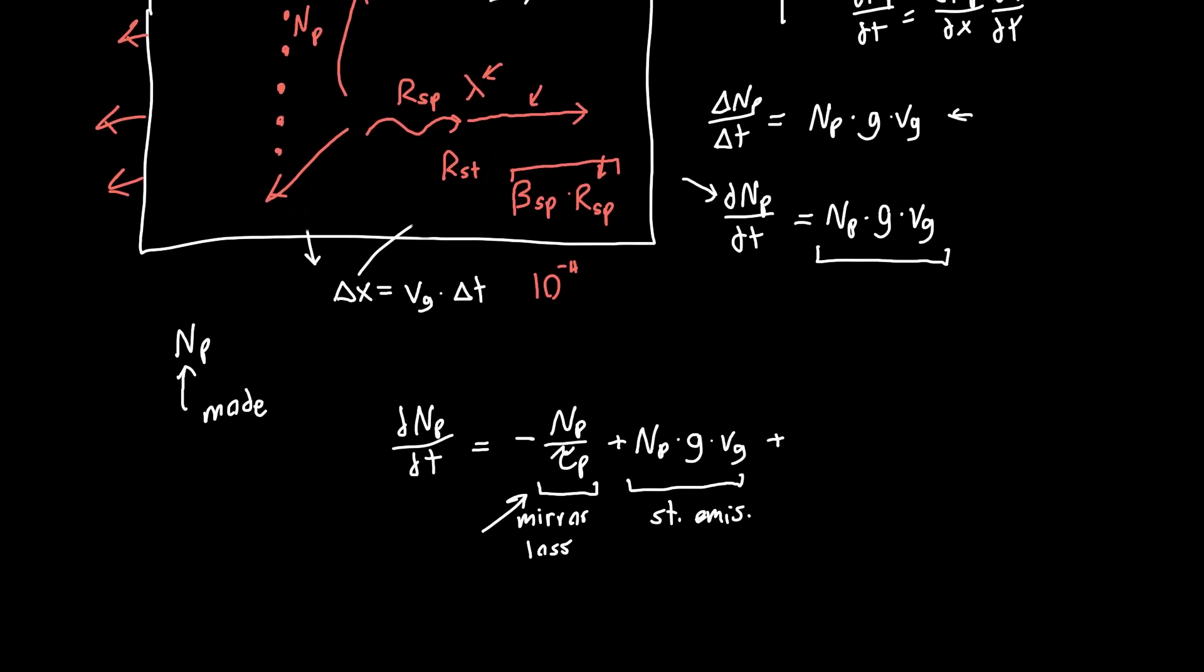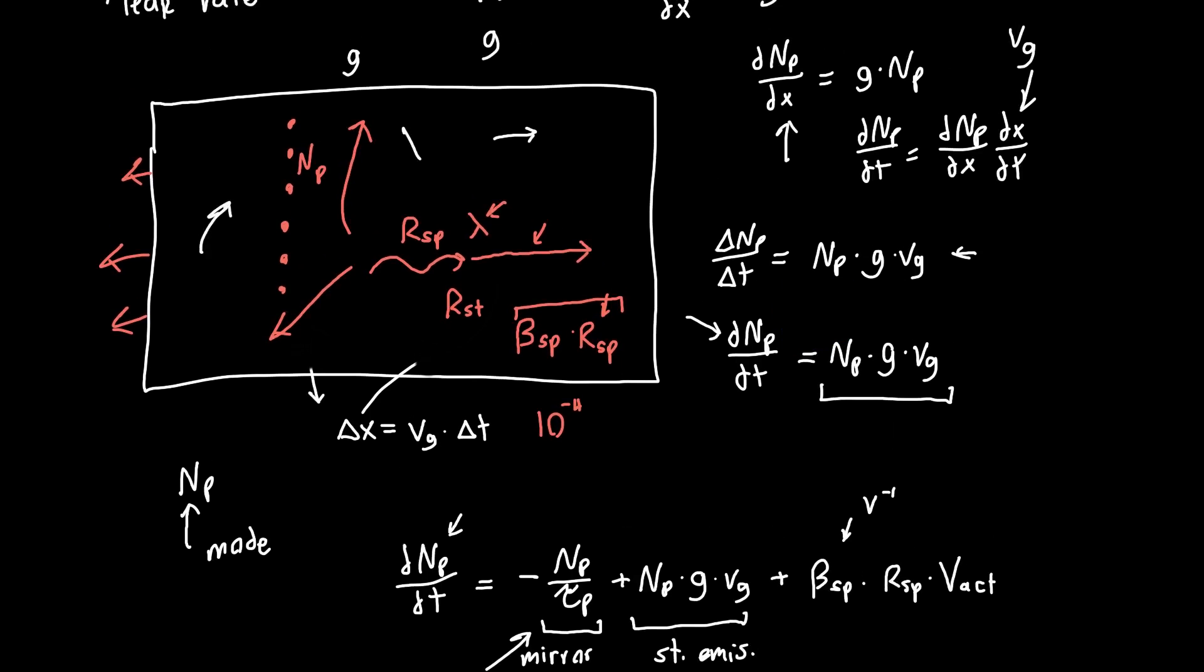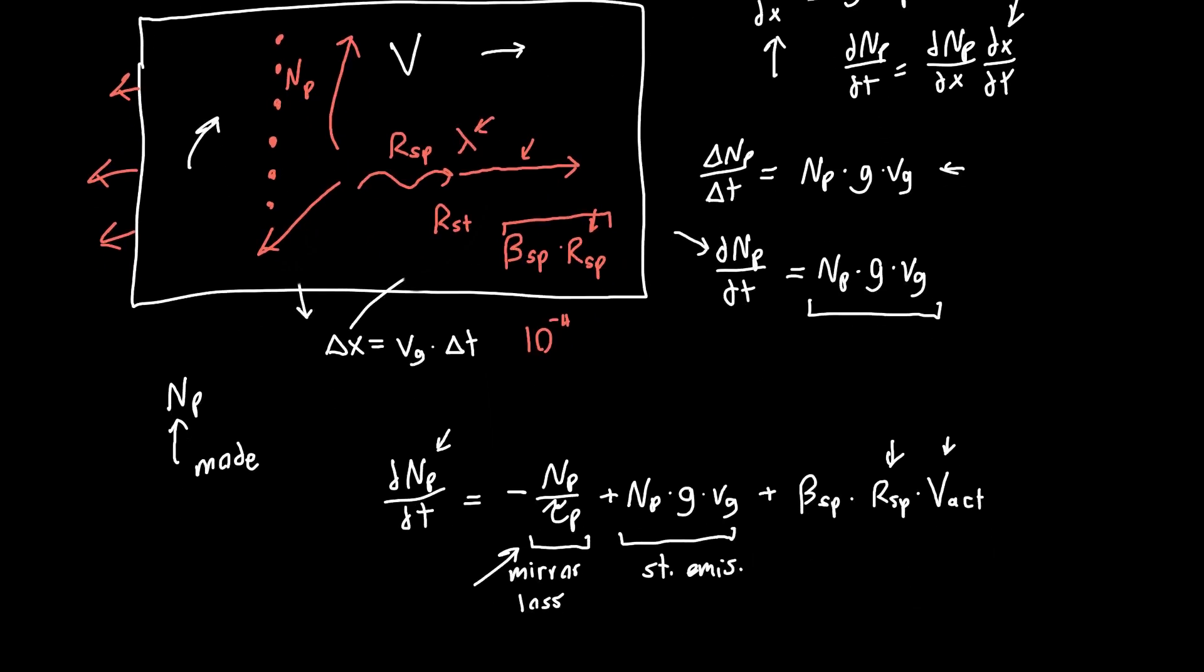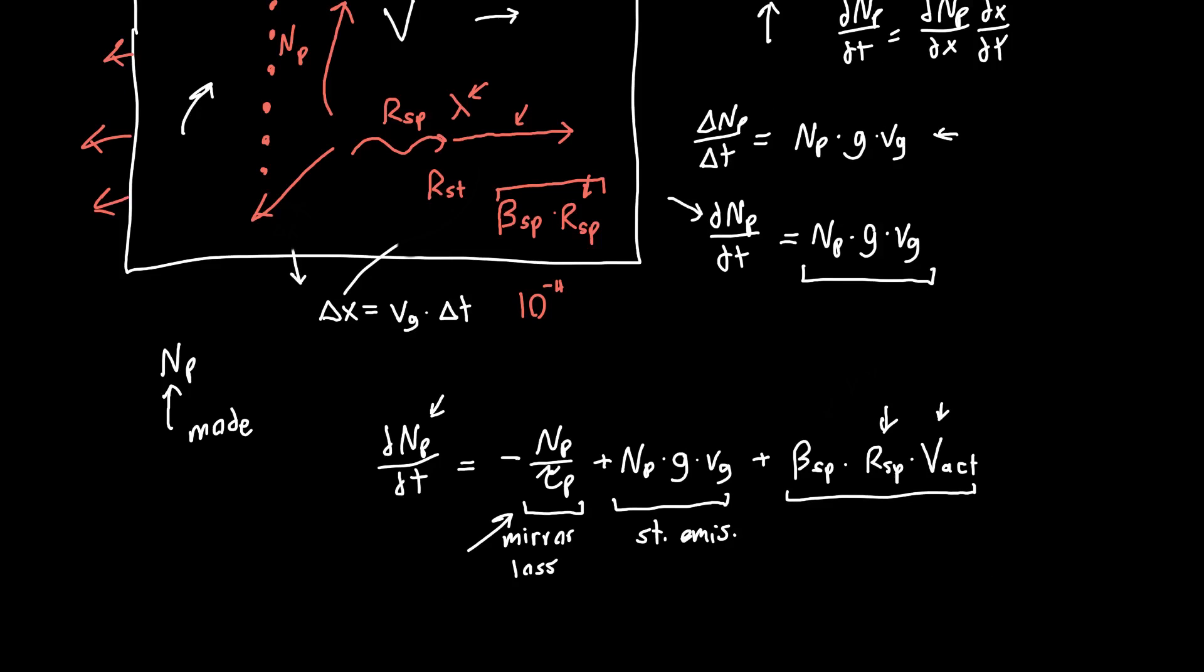So beta spontaneous times our spontaneous emission rate is something that we have to add to our total stimulated emission. This contributes to the number of photons within the cavity NP, and this is specifically the number of photons in our laser mode. So we add this term: beta spontaneous times our spontaneous emission. But this is in per unit volume, and this is the total number of photons, so we have to multiply by our active region volume, or just the volume of this semiconductor, the volume that's able to generate photons. And so now we've basically got three different terms in our differential equation: this is due to spontaneous emission, the center term is due to stimulated emission, and the leftmost term is just the photons that manage to escape. This is our final photon rate equation in terms of the total number of photons within the cavity.